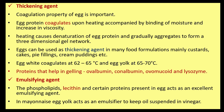Thickening agent: the coagulation property of egg is very important. Egg protein coagulates upon heating, accompanied by binding of moisture and increase in viscosity. Heating causes denaturation of egg protein, which gradually aggregates to form a three-dimensional gel network. Eggs are used as a thickening agent in custards, cakes, pie fillings, cream, and puddings. Egg white coagulates at 60–65°C and egg yolk at 65–70°C. Proteins that help in gelling include ovalbumin, conalbumin, ovomucoid, and lysozyme.